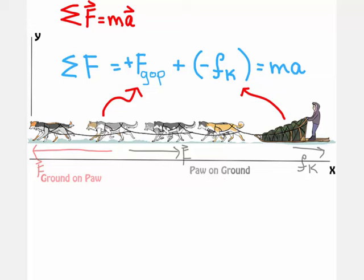Let's take this out of vector notation. Remember that it's the sum of the forces. So we're adding forces. For the kinetic friction, we're adding a negative force.